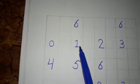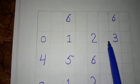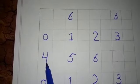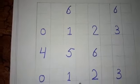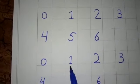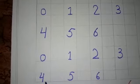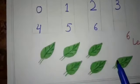Read it. 0, 1, 2, 3, 4, 5, 6. 0, 1, 2, 3, 4, 5, 6. Okay.